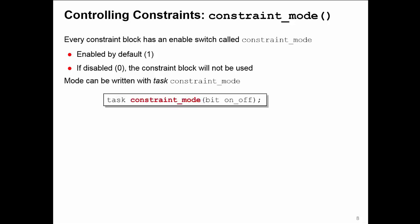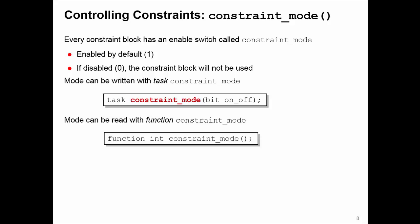You can write to the switch by using the task constraint_mode, and you can read the value of a switch by using the function constraint_mode. Only constraint blocks have a constraint mode switch. You can't use these functions with any other class member.